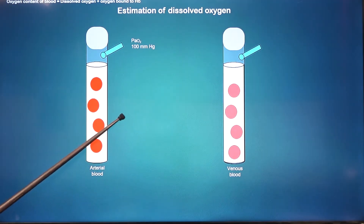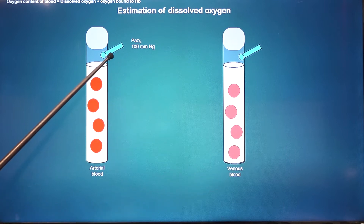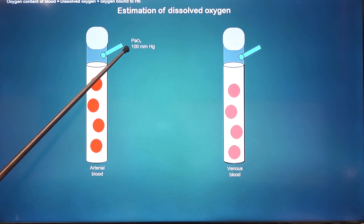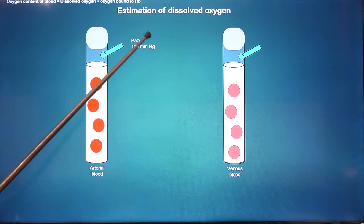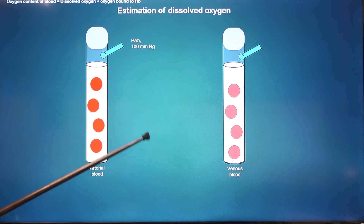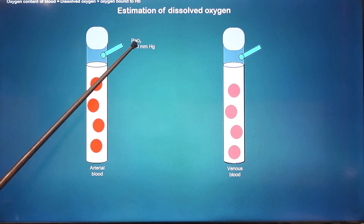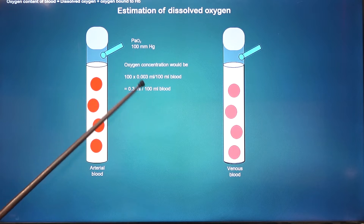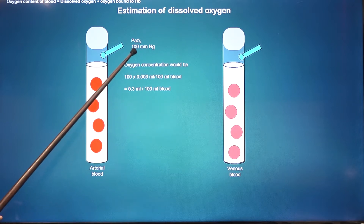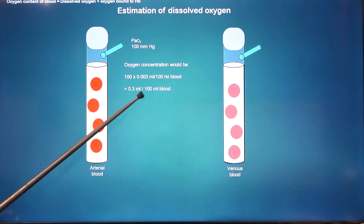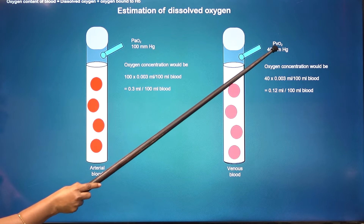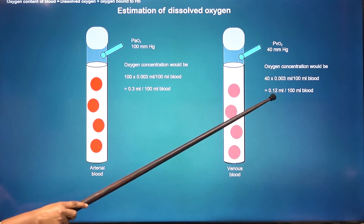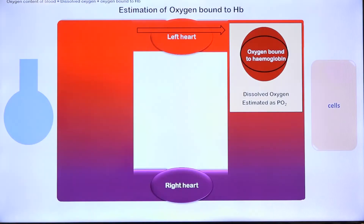Let this represent an arterial blood sample and this a venous blood sample. In normal conditions, partial pressure of dissolved oxygen is 100 mmHg in arterial blood, represented as PaO₂ — small 'a' standing for arterial (a capital 'A' would denote alveolar). The actual dissolved oxygen concentration is the partial pressure multiplied by the constant 0.003. In venous blood at rest, PvO₂ is 40 mmHg, giving a correspondingly lower dissolved oxygen concentration.